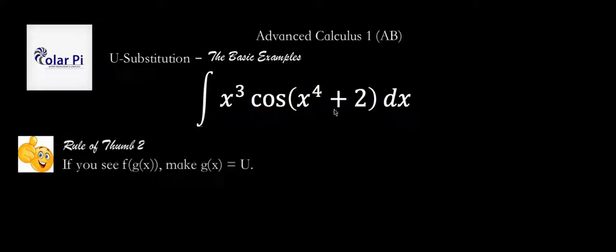So in the integrand—that's what the inside of the integral is called—you look for a composition of functions of the form f of g of x, and then you make u equal to g of x. Now, it's fairly easy to see that the composition of functions appears right there. And the composition is of the form f of g of x, where f of x is equal to cosine x.